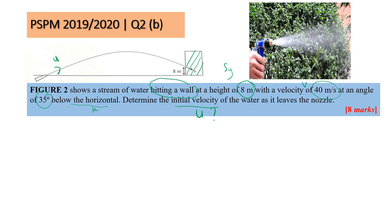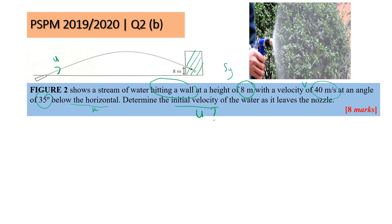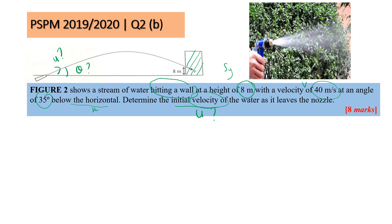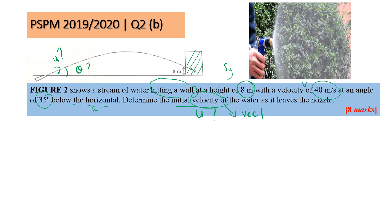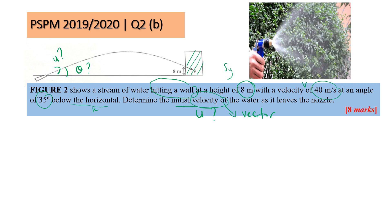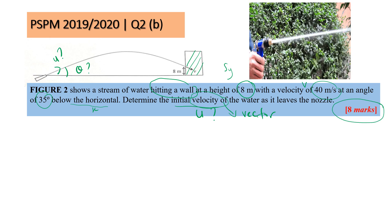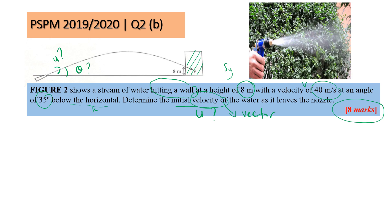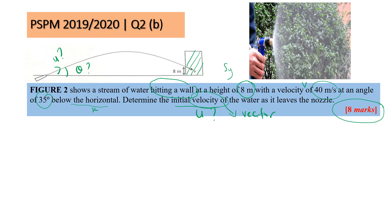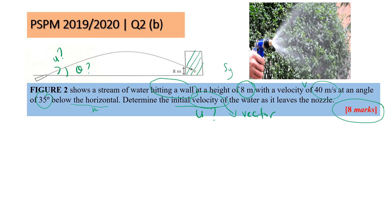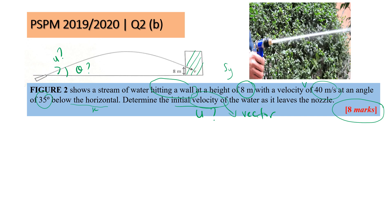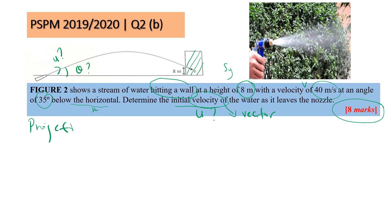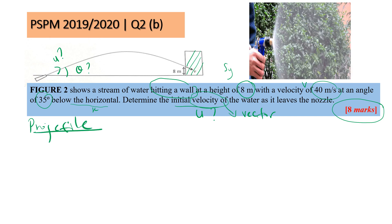Determine the initial velocity. So they ask you to find U of the water when it left the nozzle. Since this asks you to find initial velocity with the word velocity itself, it means it needs to have magnitude and also direction. Remember, velocity is a vector quantity. So your answer should have magnitude and direction. Since we have angle here, this is a projectile with angle.